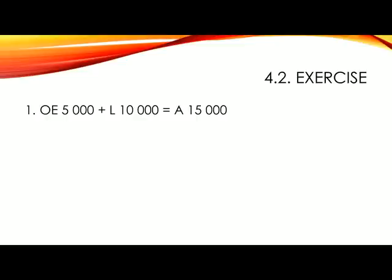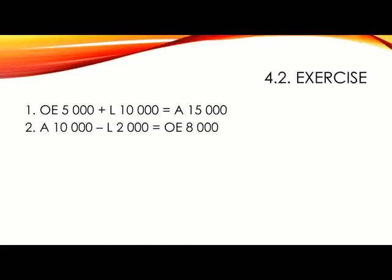Number two: if a business has assets worth R10,000 and liabilities of R2,000, what is the owner's investment in the business? In this case, we know that all the assets are R10,000 but we borrowed R2,000, so how much did the owner have to invest? This must have been R8,000, which is the difference between the assets and the liabilities. Remember that assets equals equity plus liabilities. So mathematically, to work out equity, you would simply subtract liabilities from the assets.